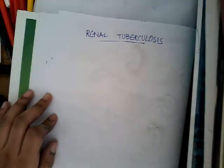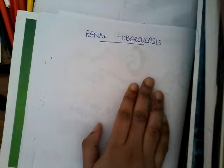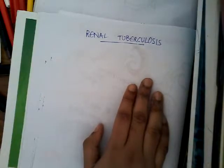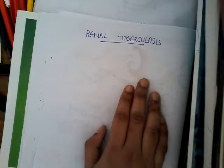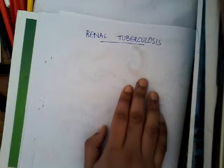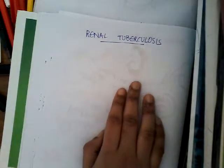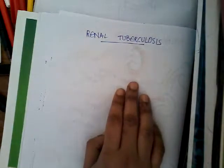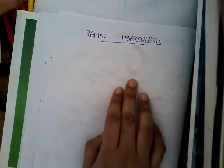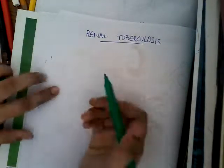Hello friends, welcome to a new lecture today on renal tuberculosis. Renal tuberculosis is most commonly caused by Mycobacterium tuberculosis. The infection can enter the kidney most commonly through the hematogenous route, that is through blood. Before going into the details, let us learn about the types of renal tuberculosis.